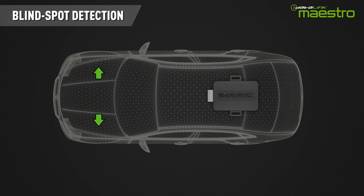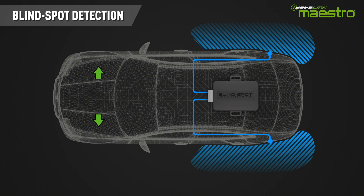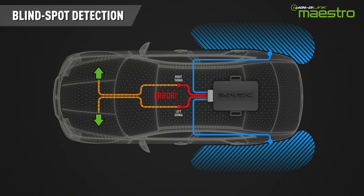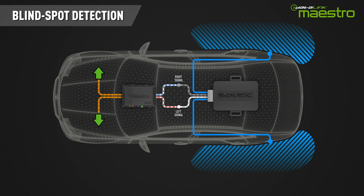For example, if you are installing an aftermarket blind spot detection system, it will have connections for the right and left turn signal wires. However, these may be very difficult to locate in a modern vehicle, or they may be monitored by the vehicle's computer and be impossible to connect without causing an error message. The Maestro RR2 can convert the turn signal messages from the vehicle's data bus and generate an analog output so you can connect to the blind spot detection system.